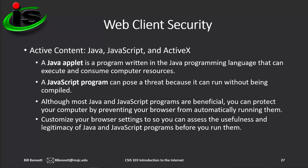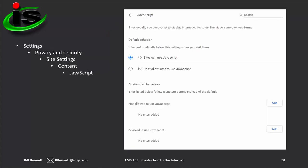Active content refers to Java and JavaScript, and also a now defunct technology referred to as ActiveX from Microsoft. A Java applet is a program written in the Java programming language that can execute and consume computer resources. A JavaScript program can pose a threat because it can run without being compiled. Although most Java and JavaScript programs are beneficial, you can protect your computer by preventing your browser from automatically running them. Changing the browser settings will increase protection for your computer, but it might cause some websites that you visited in the past to stop working properly. This screen shows the current path and JavaScript settings found in Google Chrome: open the Google Chrome menu and click Settings, then click Privacy and Security on the left side, next click Site Settings, then scroll down to the Content heading and click JavaScript.